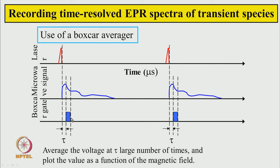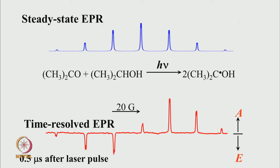We get a spectrum characteristic of whatever is present at a given time after the laser pulse — we call this the time-resolved EPR spectrum of the transient species. This is the comparison between the steady-state EPR spectrum under continuous photolysis and the time-resolved EPR spectrum under pulse laser light. The second was recorded at 0.5 microseconds after the laser pulse, and the line positions match perfectly well — the same radical is produced, nothing new chemically.